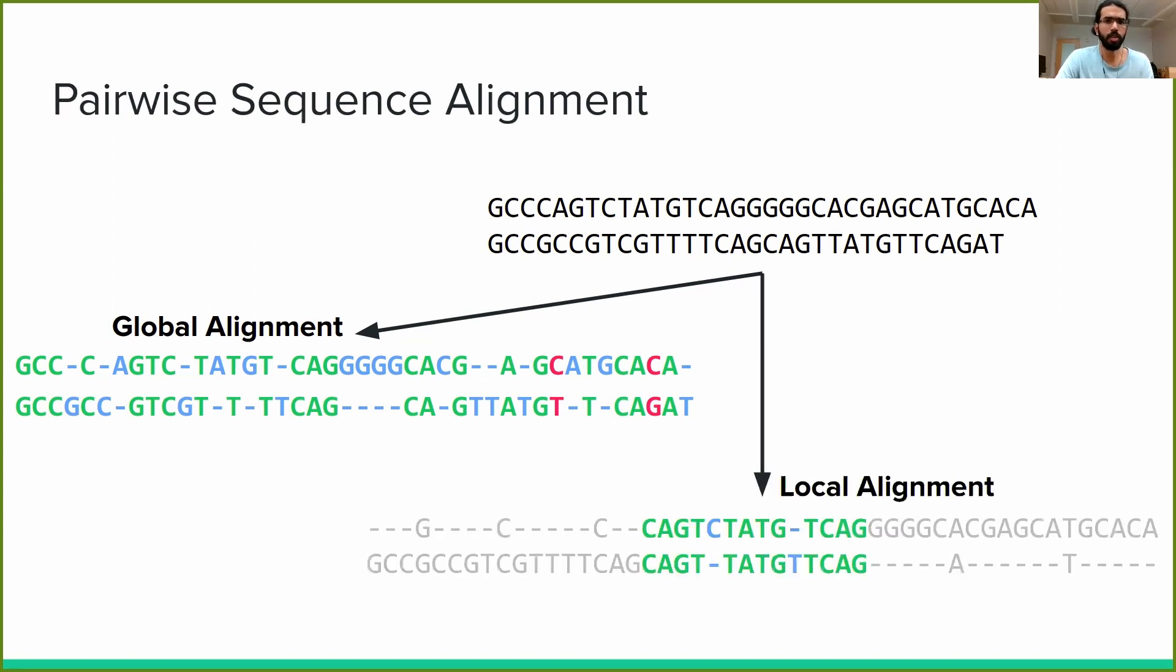Here, we have lined up the same two sequences to construct what is called a local alignment. In addition to the colors we used in global alignment, we have an additional color here. Gray represents columns that are ignored by our alignment. You'll notice that the short region included in our local alignment seemed to line up much more nicely between the two sequences than when we tried to align them using global alignment.